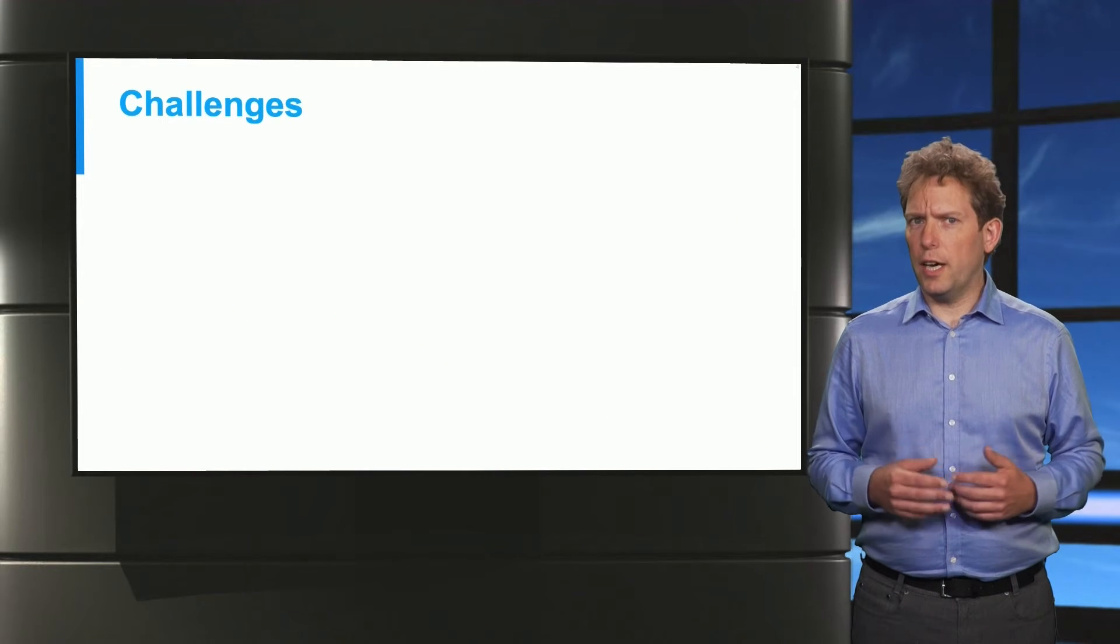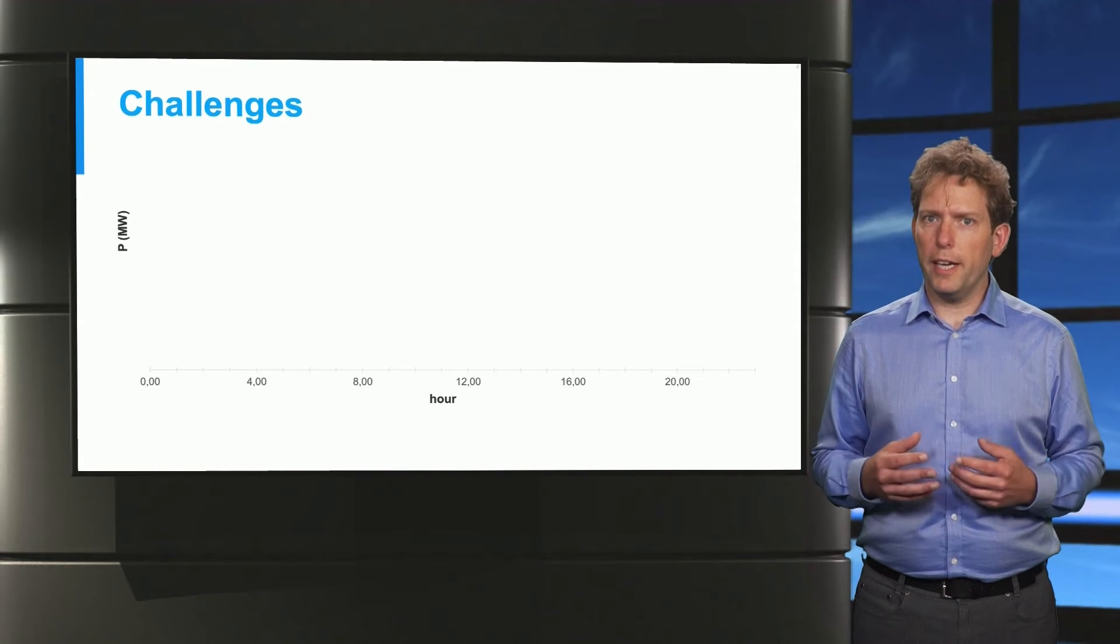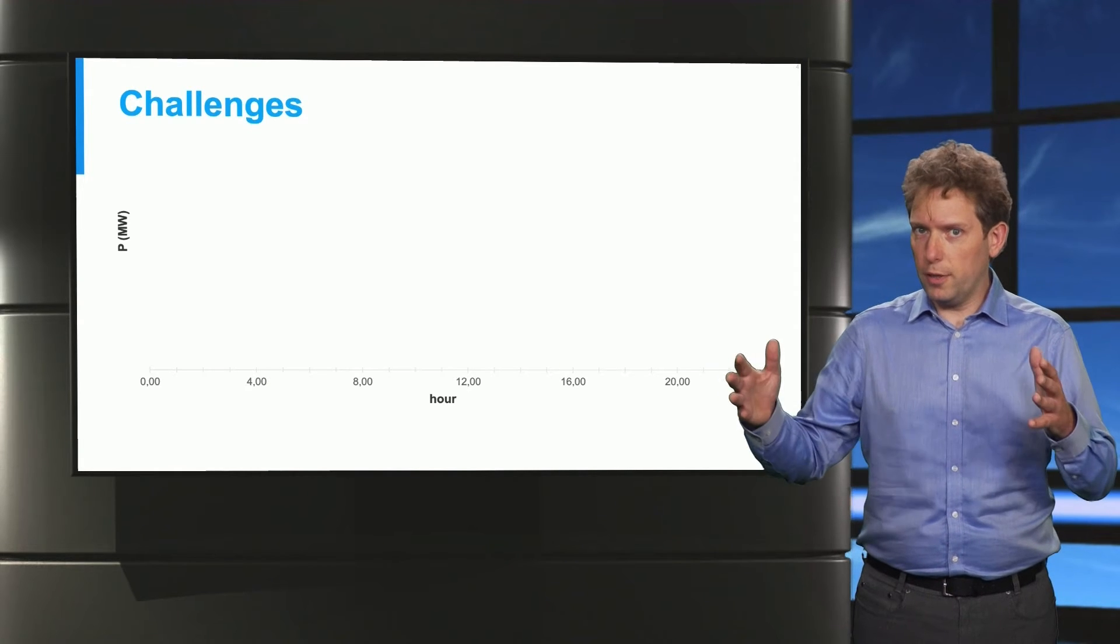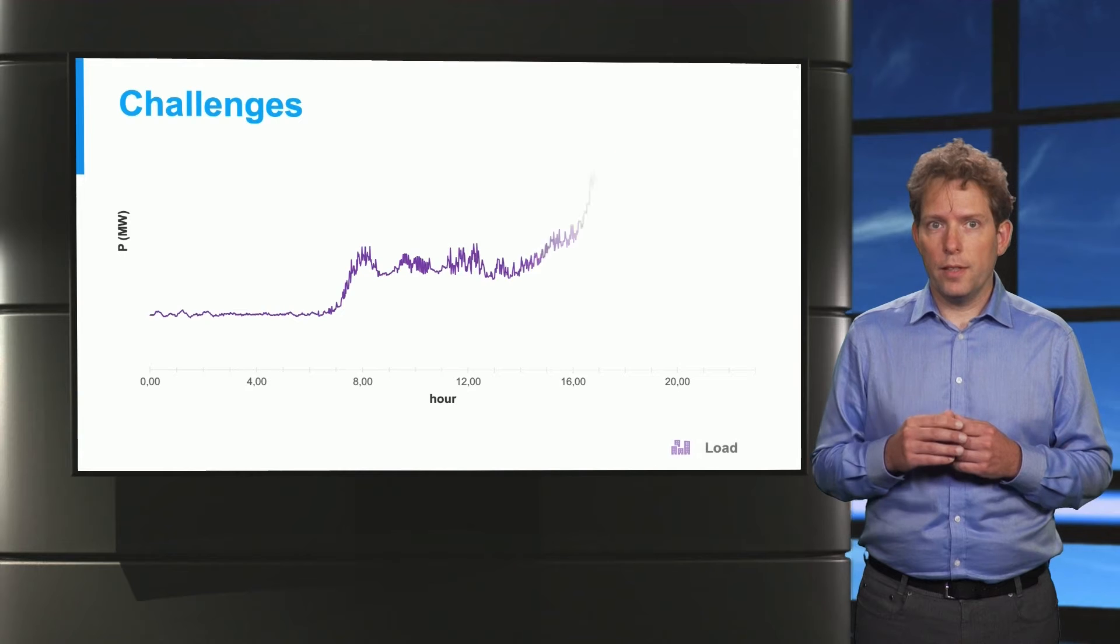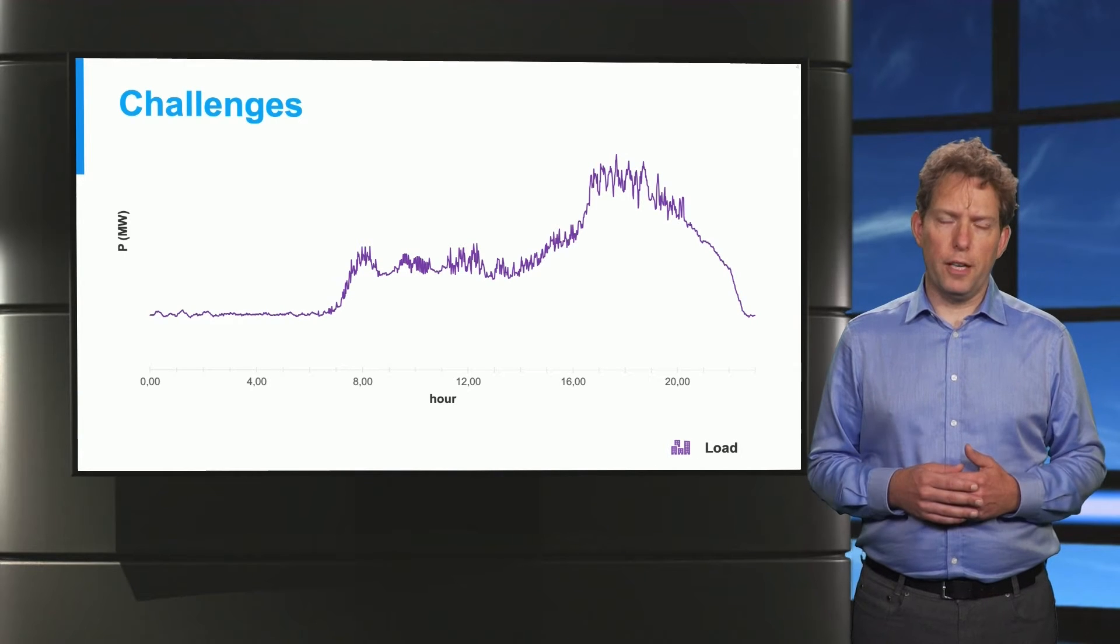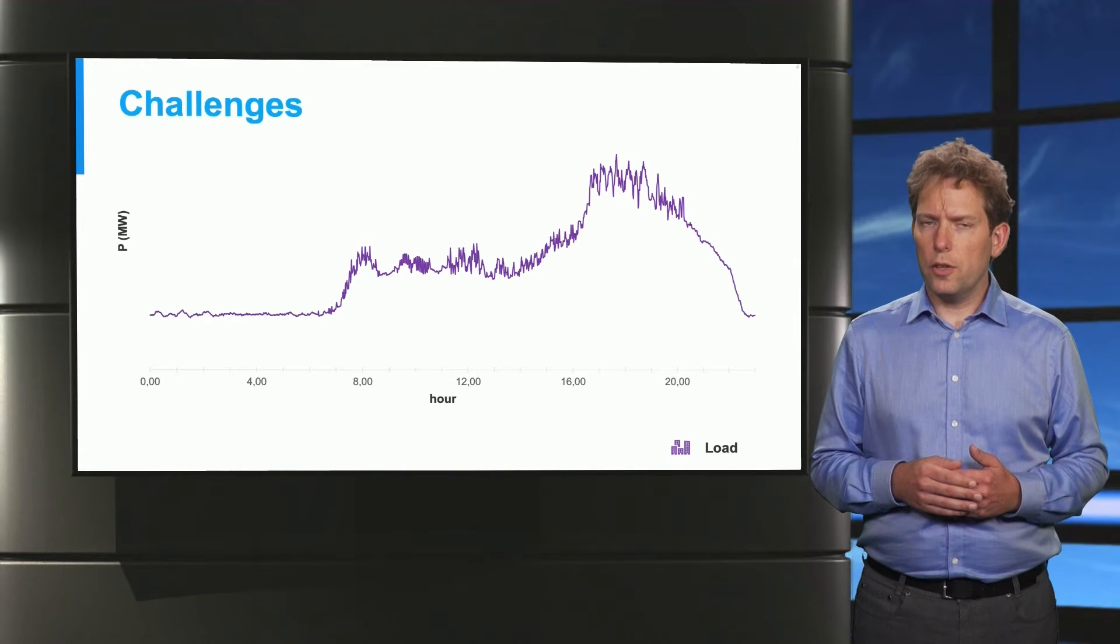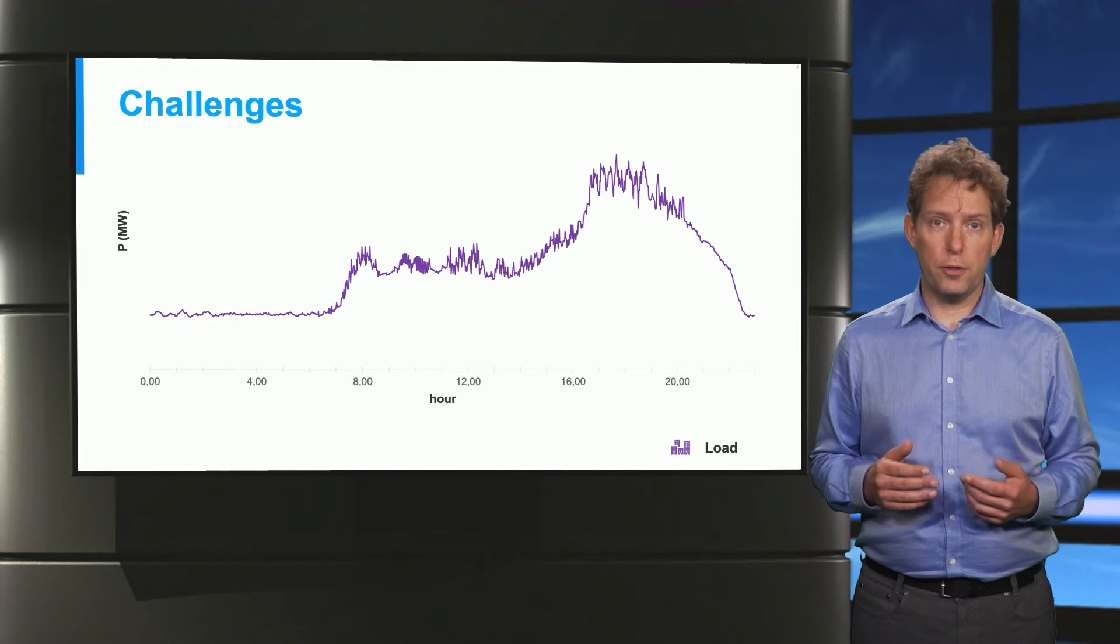So what is the challenge we are dealing with? Well, we'd like to find an optimal way to supply energy over a certain horizon, let's say one day. And to do so, we start with the total load that we need to supply, and that varies considerably over time. So how should we use our generators to supply that load?